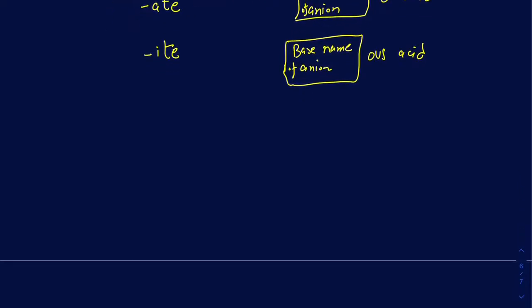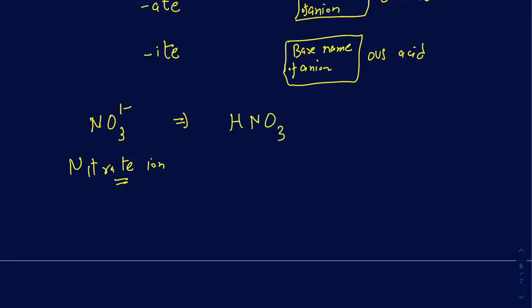For example, NO3 1- is called nitrate, so it ends with 'ate.' If I want to make an acid out of it, since it has a 1- charge, I need one proton. The name does not start with 'hydro' because it's an oxy acid. The base is 'nitr,' so it becomes nitric acid. Essentially, the 'ate' ending is getting replaced by 'ic acid.'